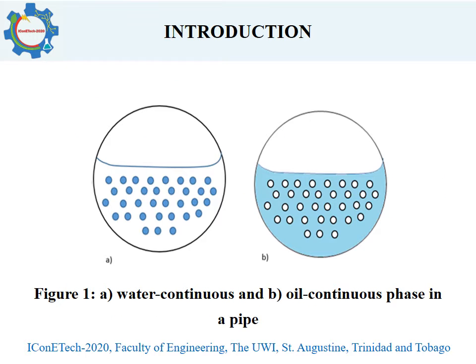Figure 1 shows the cross-sectional view of air, oil, and water flow in a pipe. Figure 1E on the left shows a water continuous phase, and Figure 1D on the right shows an oil continuous phase. In this work, no emphasis is given to inlet and outlet points. However, work is done to check the effects of these on flow pattern, pressure drop, and hold-up.